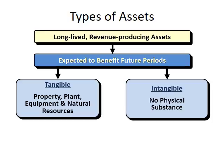We have two types of long-term assets. The first one is tangible assets — tangible assets have physical substance. Examples include property, land, equipment, and natural resources. For example, if you have equipment you can use it to produce goods or to provide service to your customers.